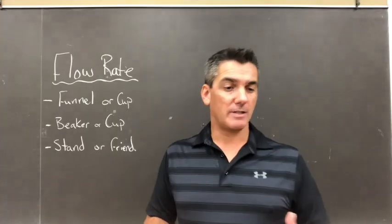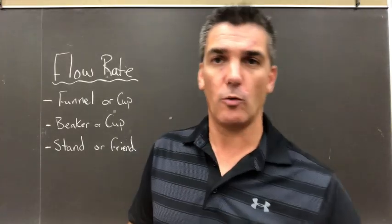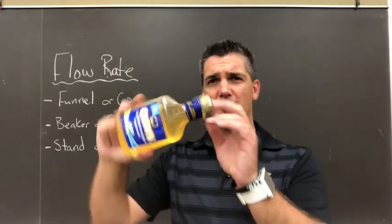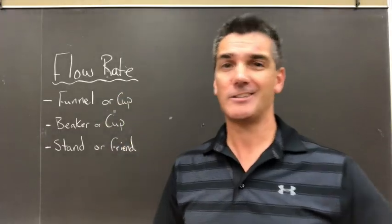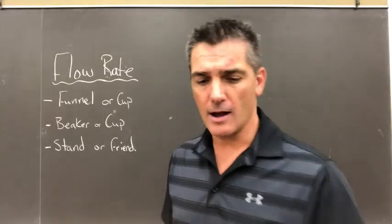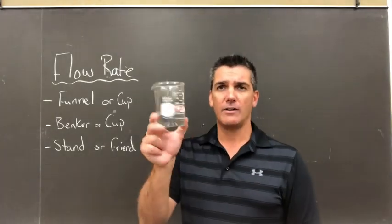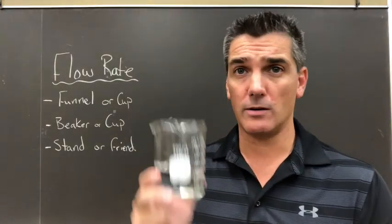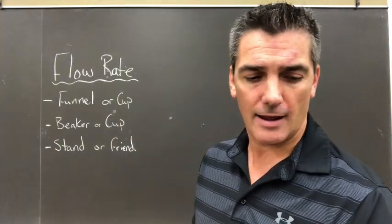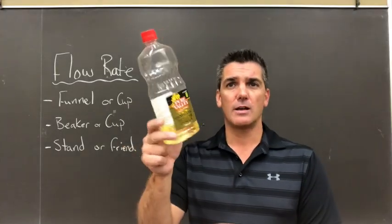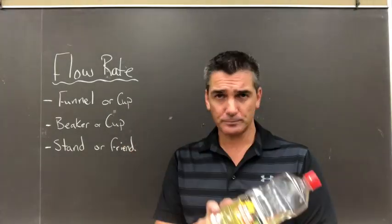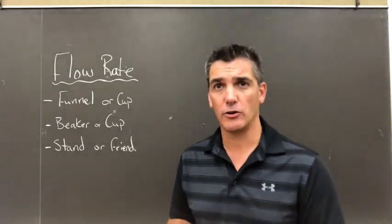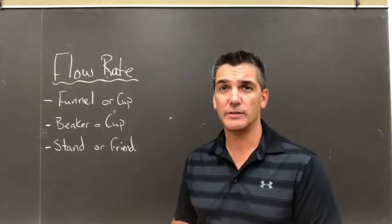In this experiment I'm going to use a couple of different fluids. The first is corn syrup — it's pretty thick, and when things are thick we call them viscous, meaning it has a high viscosity. On the other end of the scale I'll use regular water, and in the middle I'll use vegetable oil. These three fluids will show us how viscosity affects flow rate.